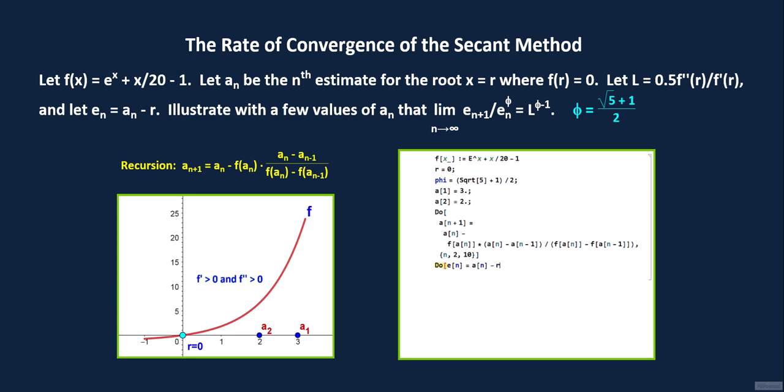a sub n starts at a sub 1, and we start n for this do loop at n equals 1. And if n ends at 10, the last error value that we will have computed will be e sub 11. Therefore, we continue this do loop up to n equals 11.